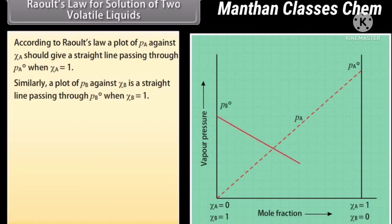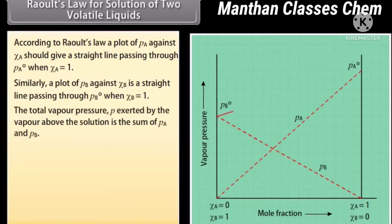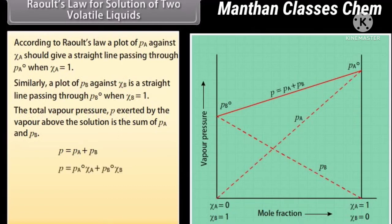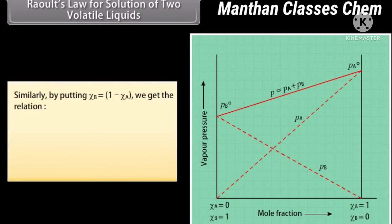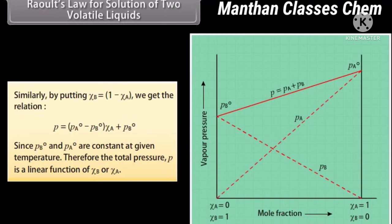Similarly, a plot of Pb against XB is a straight line passing through P°B when XB = 1. The total vapor pressure P above the solution is the sum of Pa and Pb. Substituting XA = 1 − XB gives P = (P°B − P°A) × XB + P°A. Similarly, substituting XB = 1 − XA gives P = (P°A − P°B) × XA + P°B. Since P°B and P°A are constant at a given temperature, the total pressure P is a linear function of XB or XA.